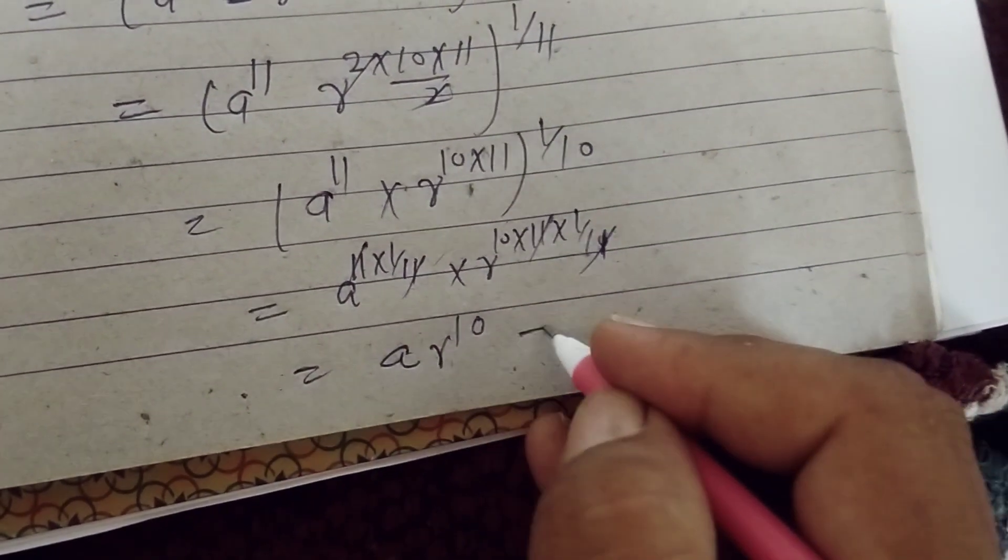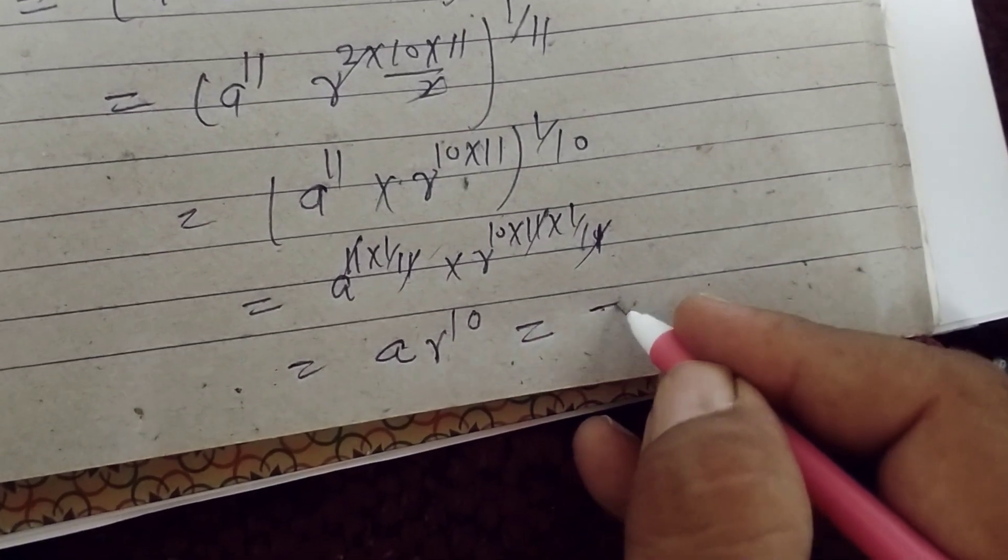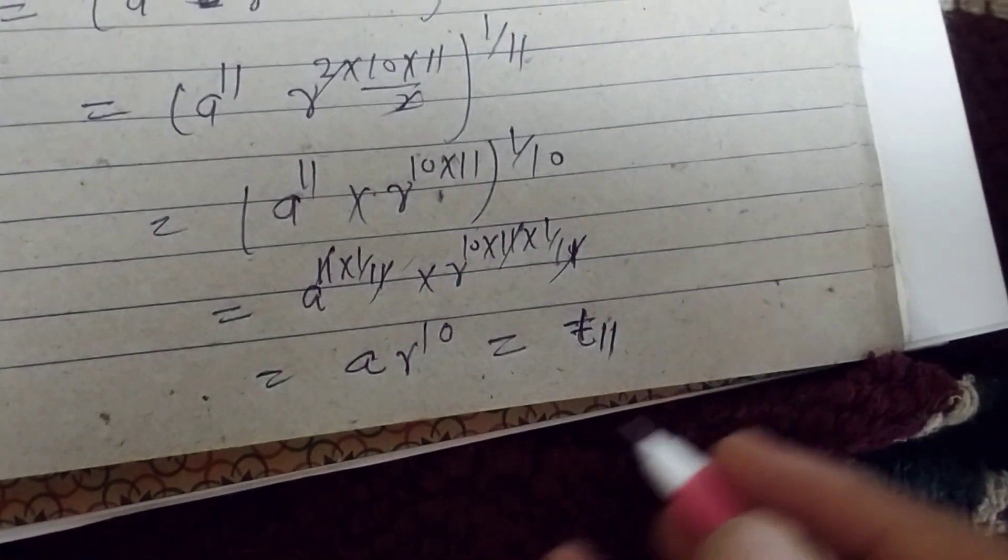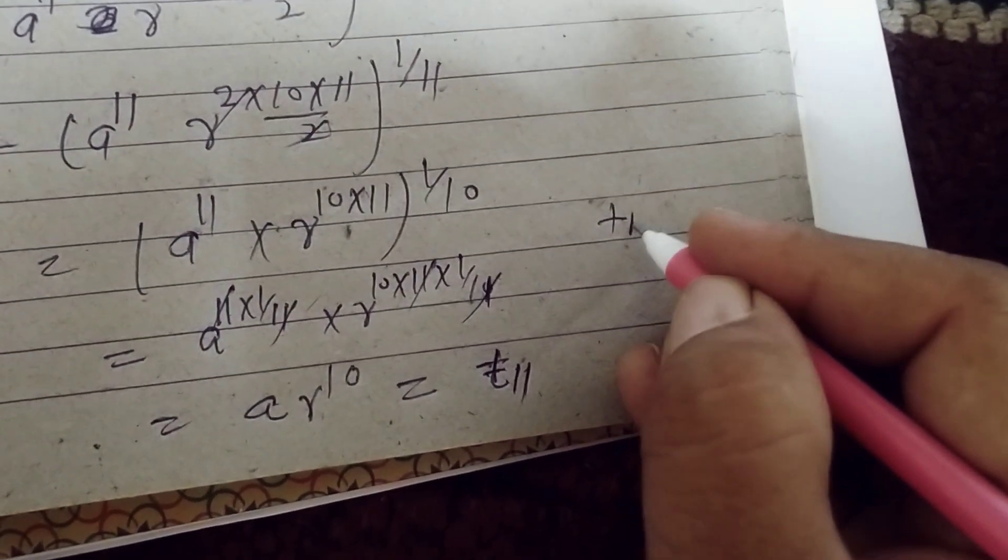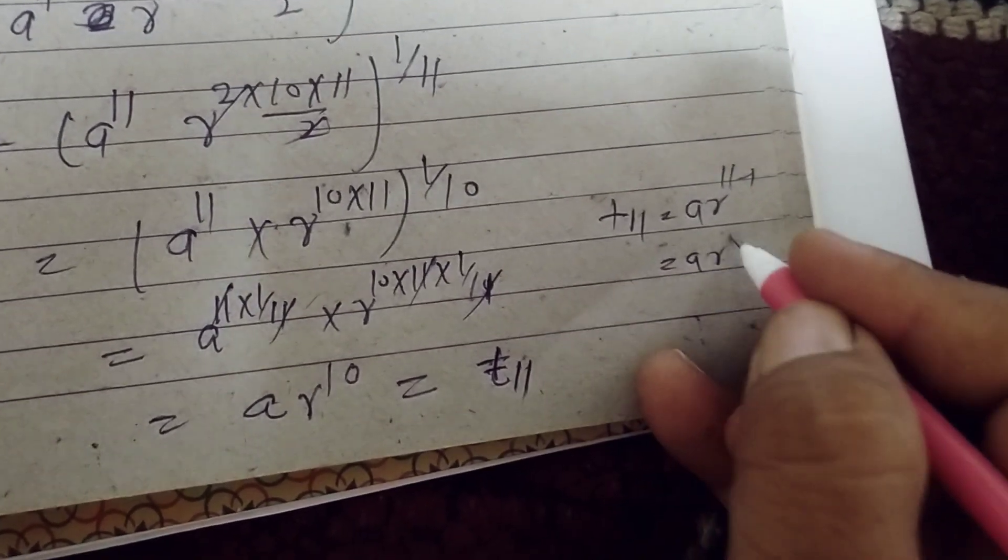ar to the power 10 is what? This is t11, the 11th term. t11 equal to ar to the power n minus 1, 11 minus 1, ar to the power 10.